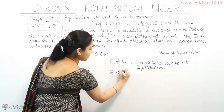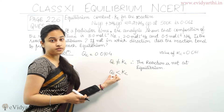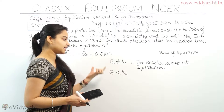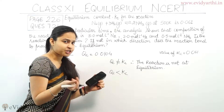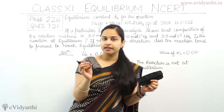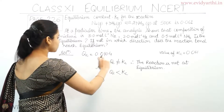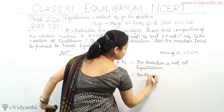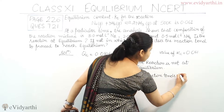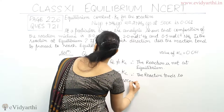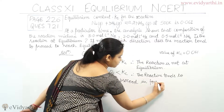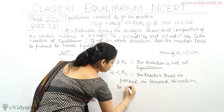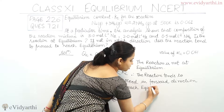The value of Qc is less than Kc. That means the reaction quotient is lesser than the value of the equilibrium constant. So if Qc is less than Kc, then the reaction tends to proceed in the forward direction to attain equilibrium. Therefore, the reaction tends to proceed in the forward direction to reach equilibrium.